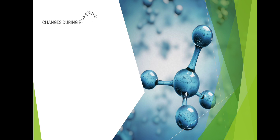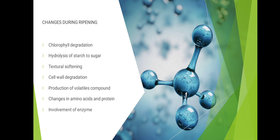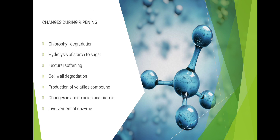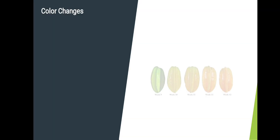Changes during ripening include: chlorophyll degradation, hydrolysis of starch to sugar, textural softening, cell wall degradation, production of volatile compounds, changes in amino acids and protein, involvement of enzymes, and color changes.